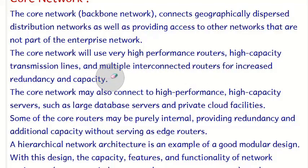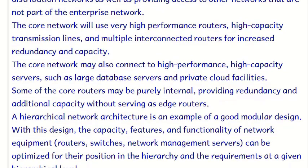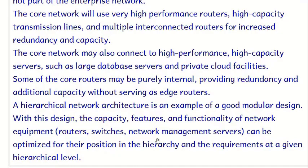The core network also requires high-capacity transmission lines and multiple connected routers for redundancy and capacity, so that if any router fails, another can take over. The core network may also connect to high-performance, high-capacity servers such as large database servers and private cloud facilities. Core routers may be purely internal, providing redundancy and additional capacity without serving as edge routers.